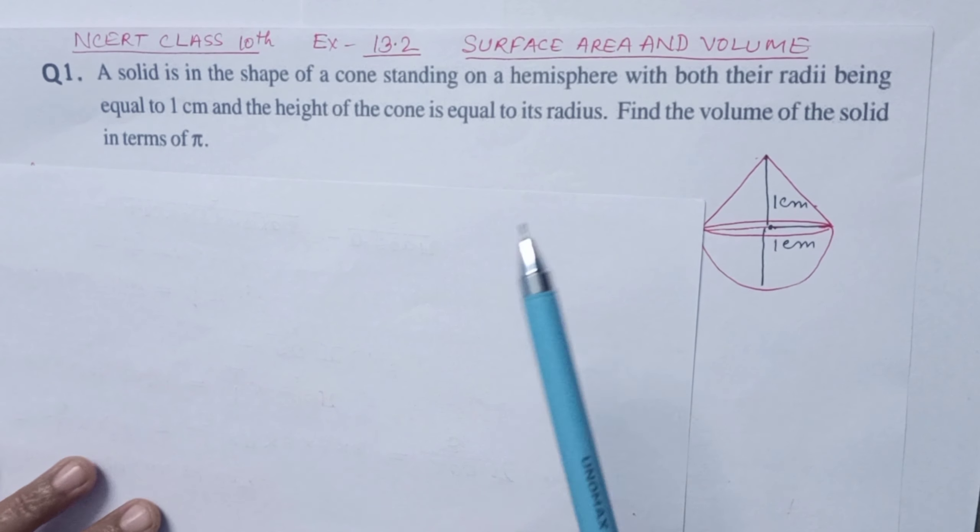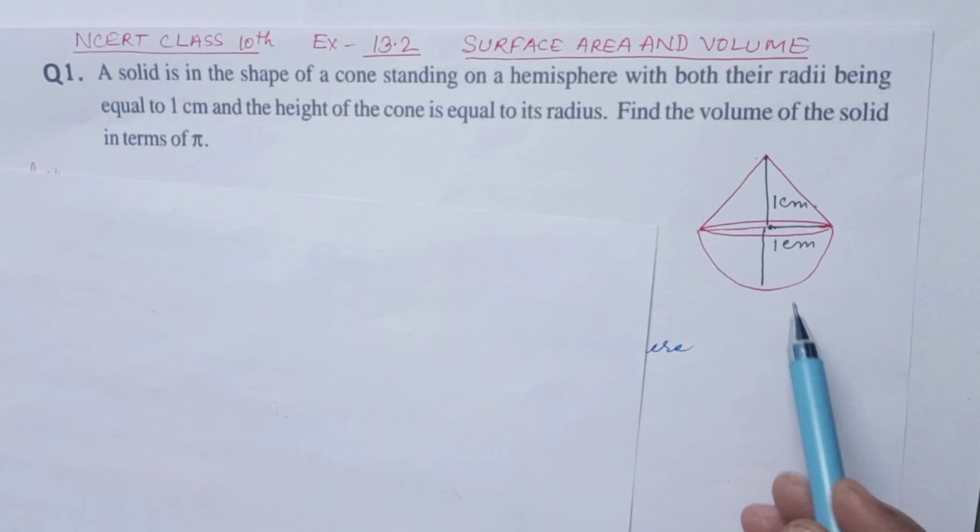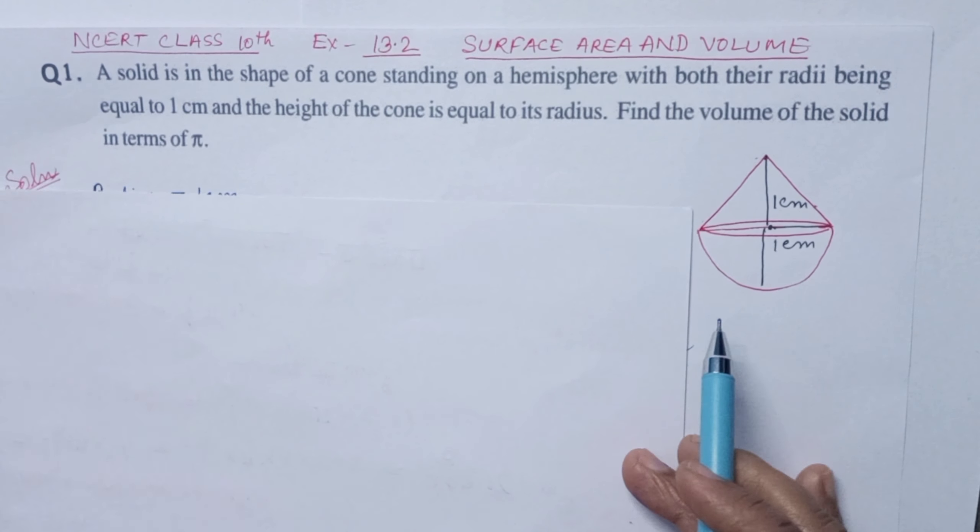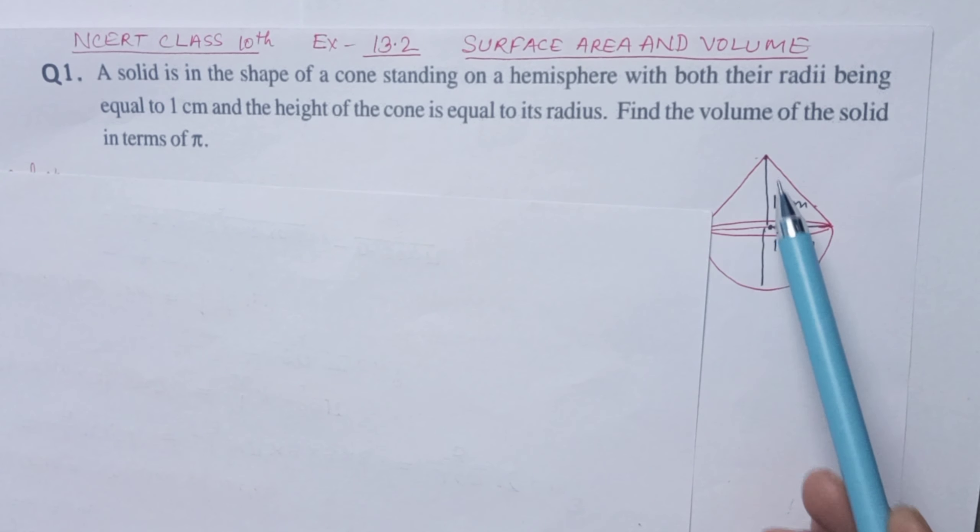The question says there is a solid which is in the shape of a hemisphere. On top of it, a cone is mounted. Both have the same radius - that is 1 centimeter. The cone's height is also 1 centimeter, radius is also 1 centimeter, and the hemisphere's radius is 1 cm.